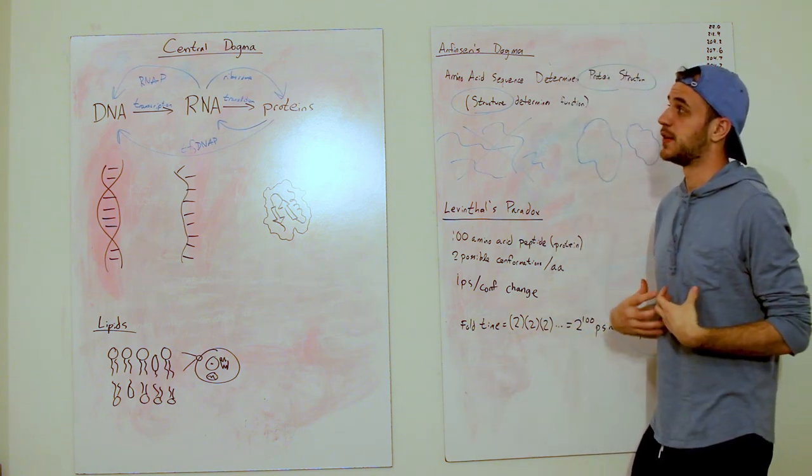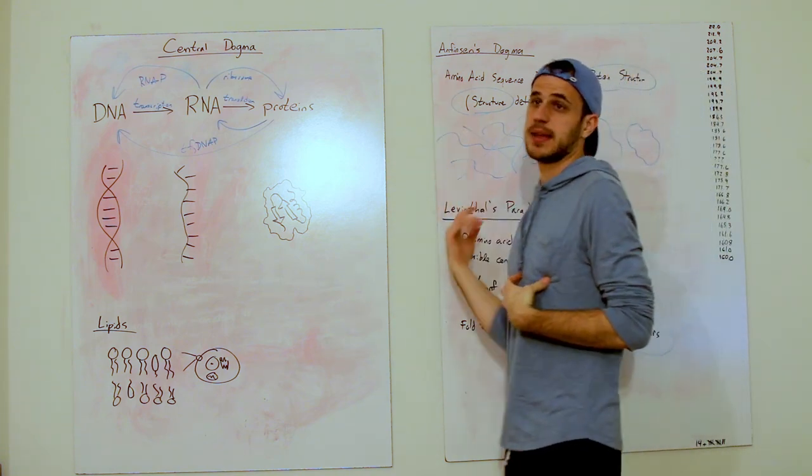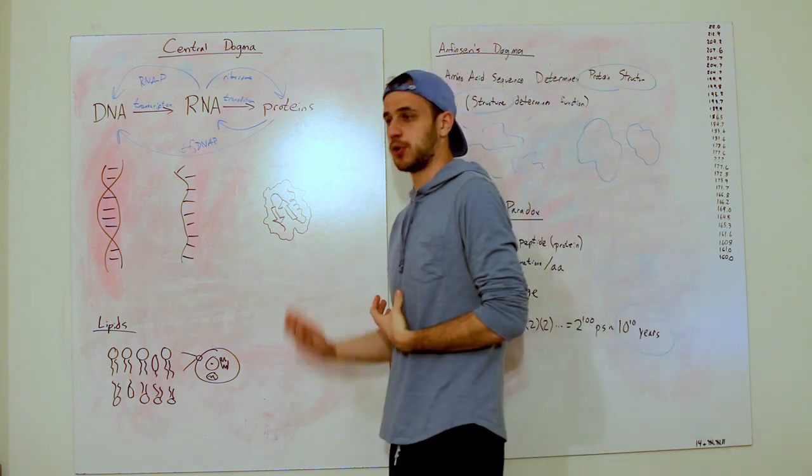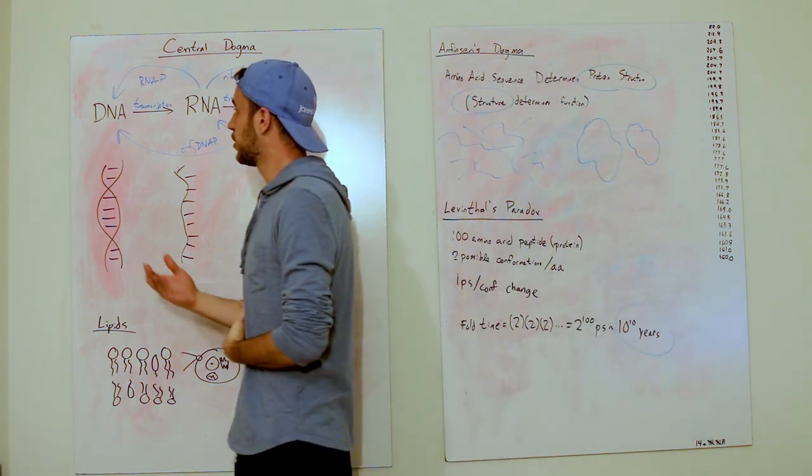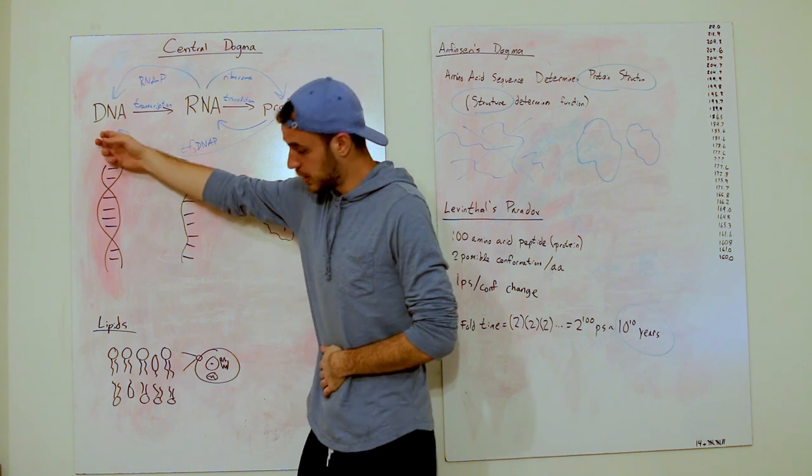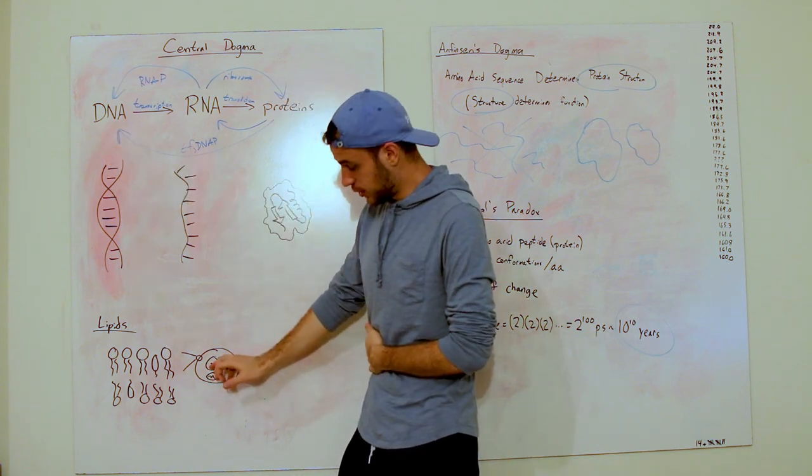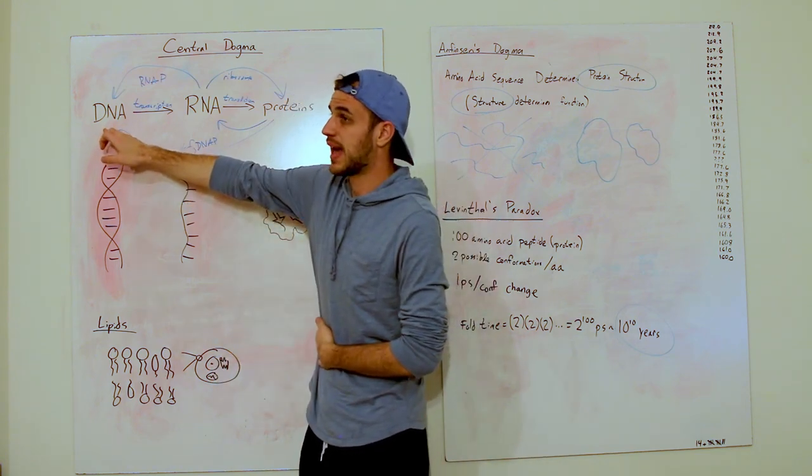So that's the basics of the central dogma and the basics of the ideas of a protein. So protein, you go from DNA to the cell. You have a nucleus. The nucleus has the DNA.